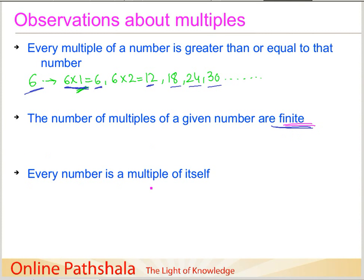The third property is that every number is a multiple of itself. This follows from the first example: if we take the number 6, we have 6 multiplied by 1. A number will always be a multiple of itself when we multiply it by 1. These are the three observations about multiples.